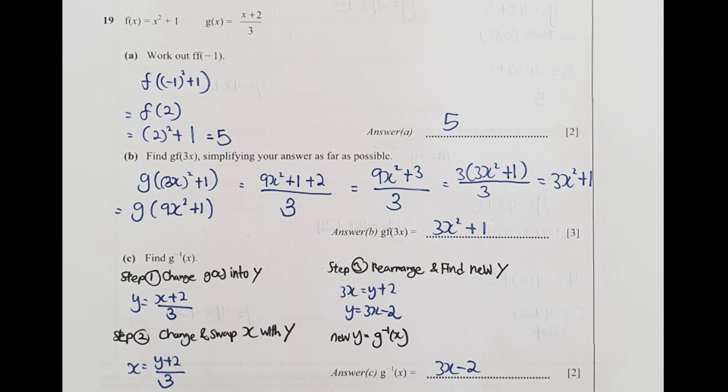To find inverse of gx, I have a three-step method. First change gx into y, step 2 is to swap x and y's position with each other, then step 3 rearrange and find the new y. Your new y here is 3x minus 2, and this will be your g inverse result.